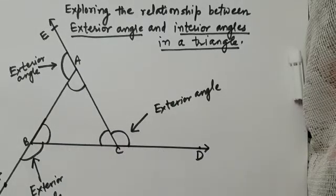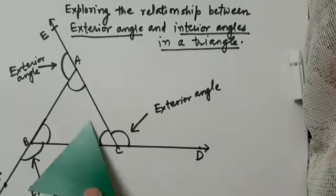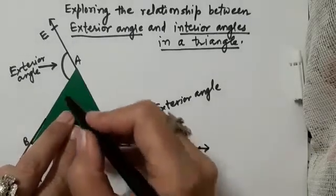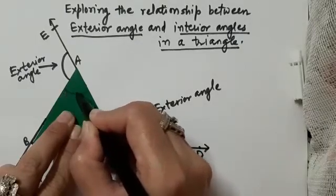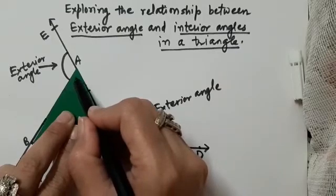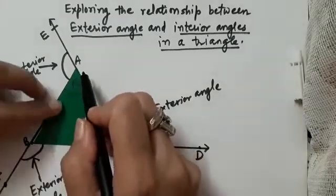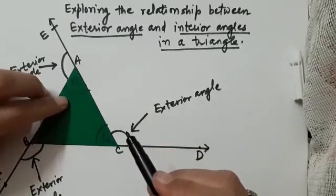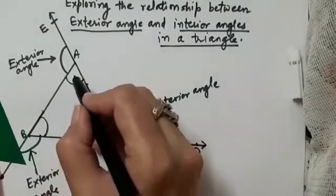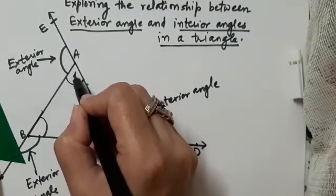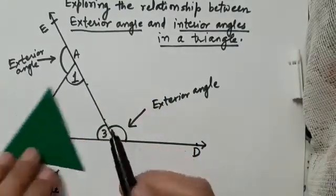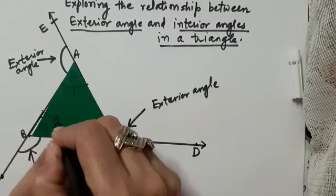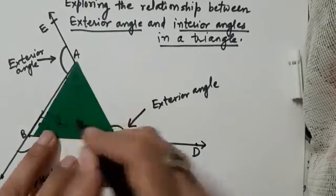For doing so, I have taken a replica of triangle ABC. This replica will help us. I am marking the vertices A, B, and C. For convenience, we label the interior angles as angle 1, angle 2, and angle 3.